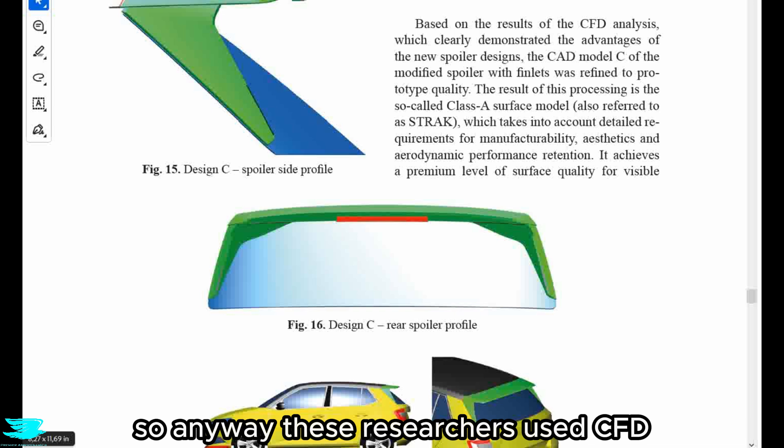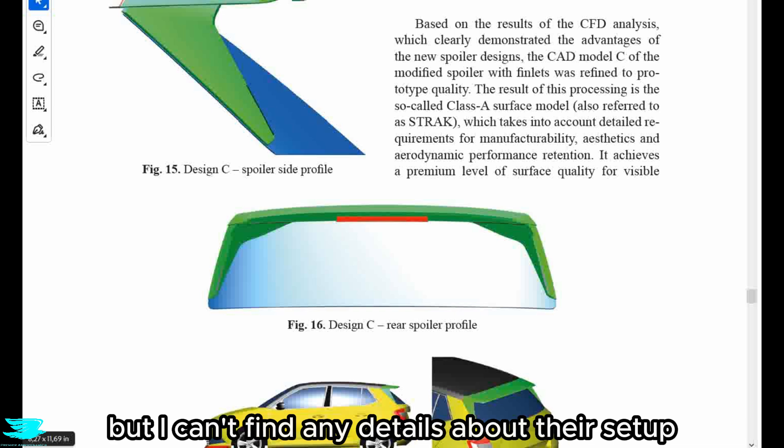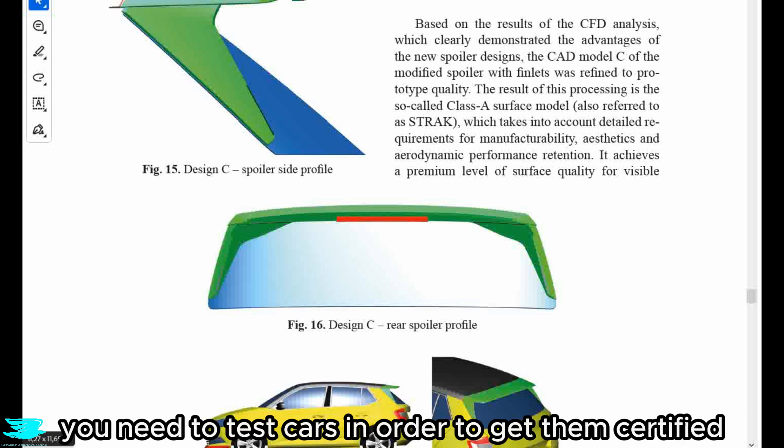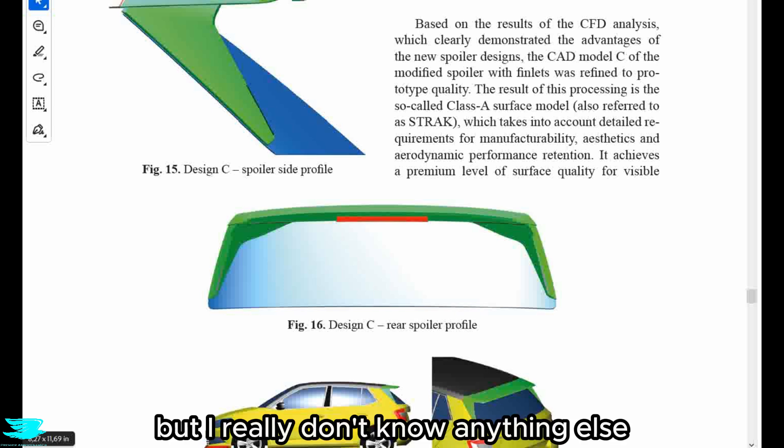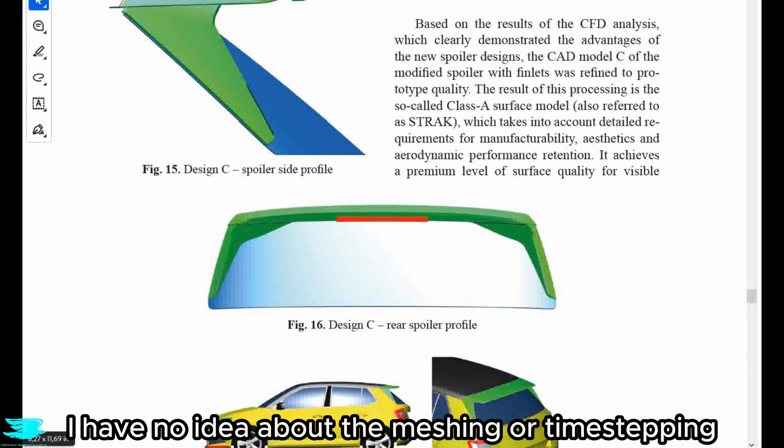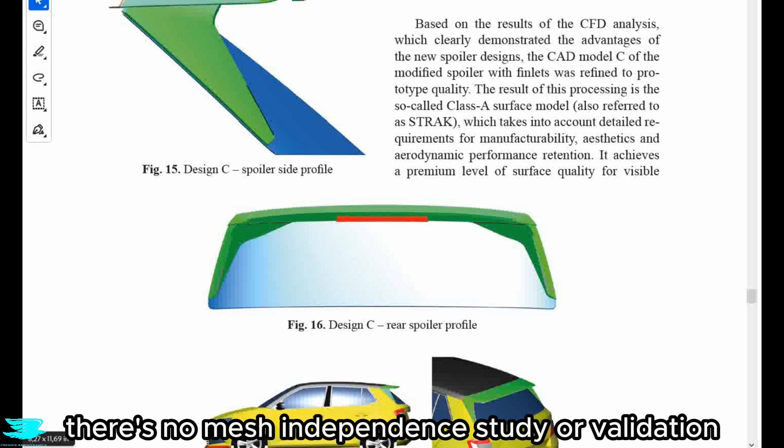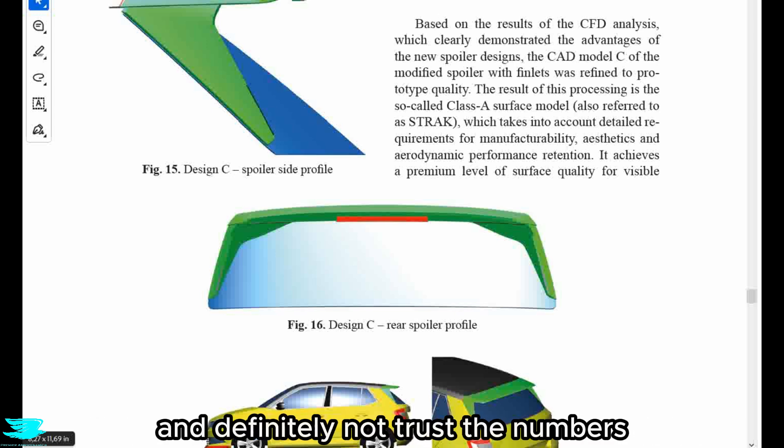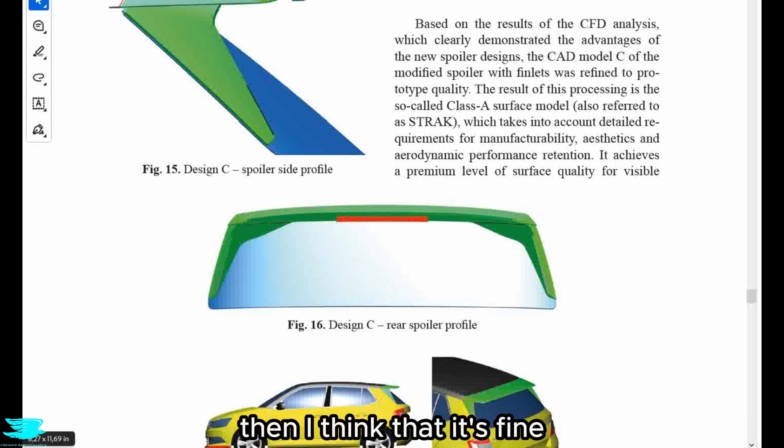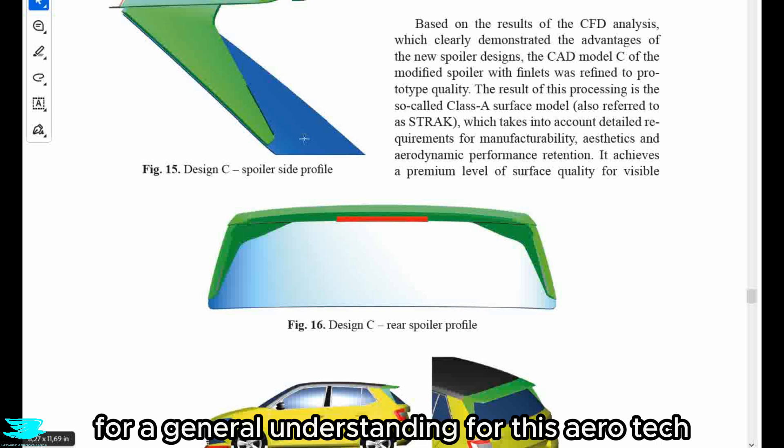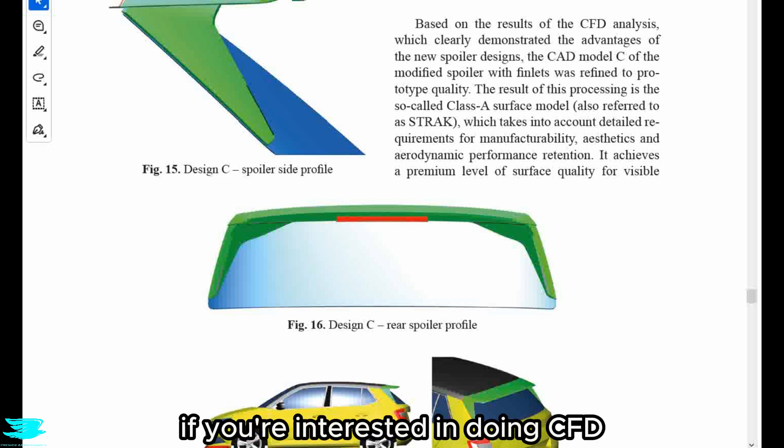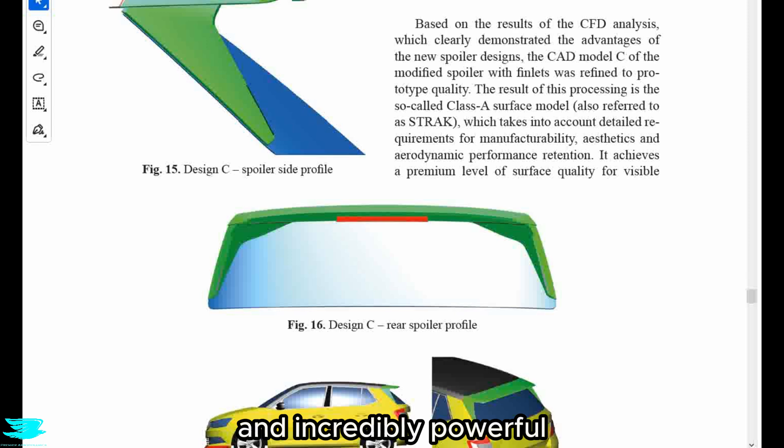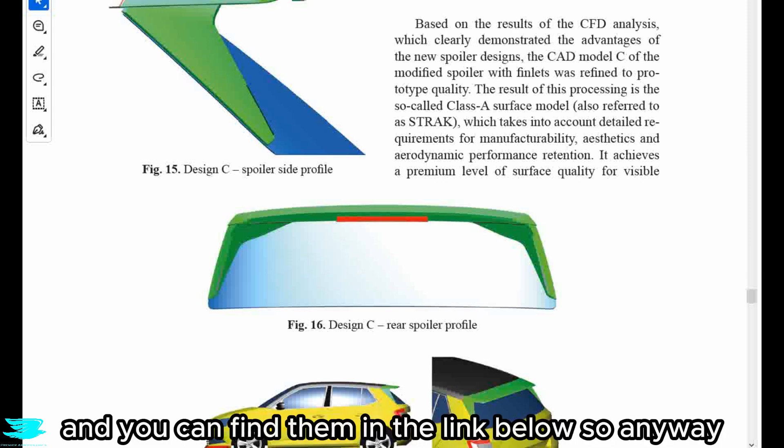So anyway, these researchers used CFD, but I can't find any details about their setup other than it was at 140 kph, which is the speed you need to test cars in order to get them certified. But I really don't know anything else. It could be RANS, DES. I have no idea about the meshing or time stepping. There's no mesh independent study or validation. So going forward, we should probably really just look at the trends and definitely not trust the numbers. If the designs follow similar trends, then I think that it's fine for a general understanding for this aero tech. But on the other hand, if you're interested in doing CFD or anything you really like, then check out our courses on OpenFOAM. It's a completely free CFD software and incredibly powerful.